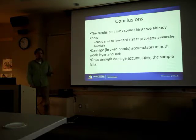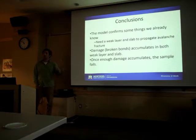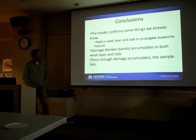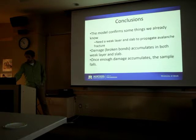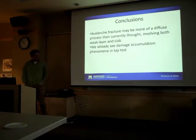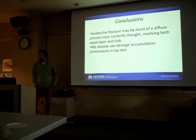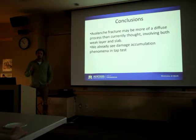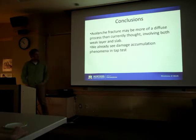Looking at this, the model confirms some things we already know - you need a weak layer and a slab to propagate a fracture, which we all know from being out in the field. We're also learning that damage accumulates in both the slab and the weak layer, and that damage process in the slab shouldn't be counted out. Once enough damage accumulates, the sample fails. This fits well with the damage accumulation viewpoint - in field tests like tap tests, column tests, and extended column tests, every time you tap that shovel you're breaking a few more bonds in the snowpack until eventually the whole thing goes.